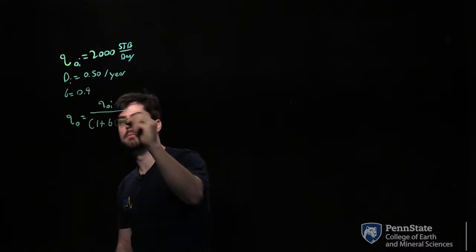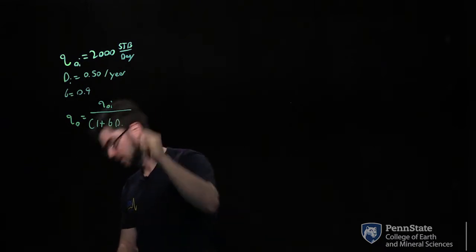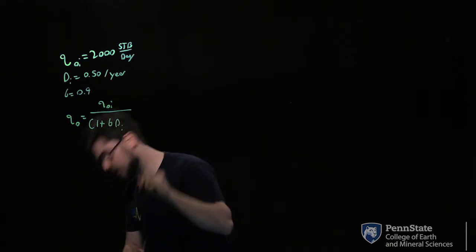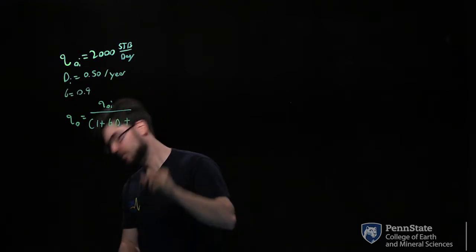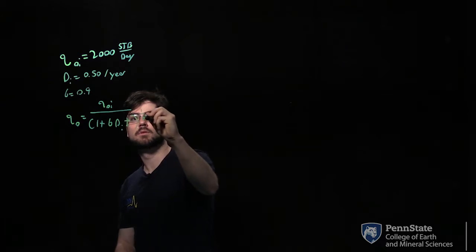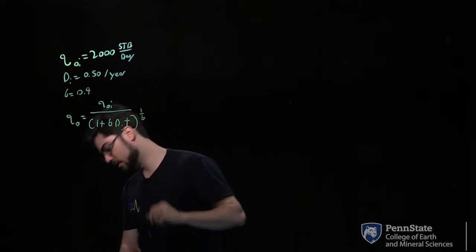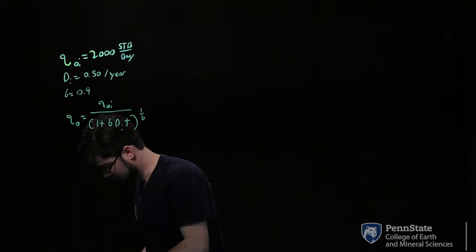...divided by (1 + B × DI × T) to the power of 1 over B, where T is time in years.